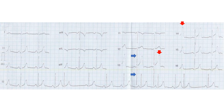This ECG also shows deep S waves in V2 and V3, which might indicate left ventricular hypertrophy. The tall T waves in V3 and V4 are more of a normal variant than what could occur in hyperkalemia and the hyperacute phase of myocardial infarction. The latter condition is often missed and mandates a repeat ECG if the clinical condition is suggestive.